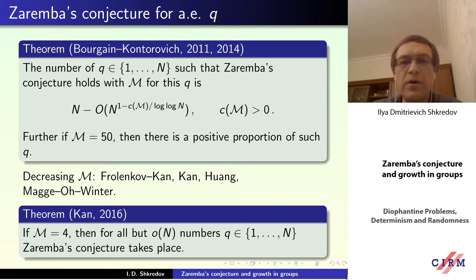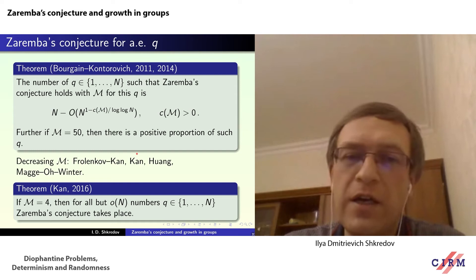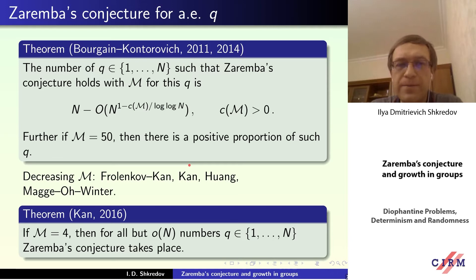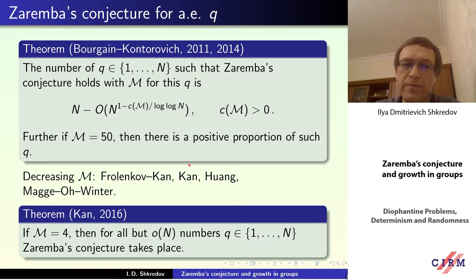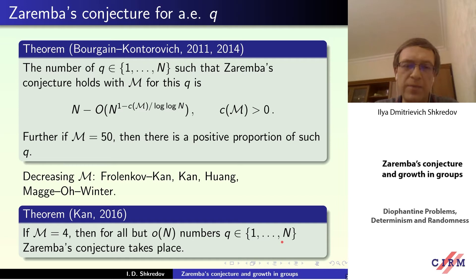For example, if one takes m equal to 50, then they showed there is a positive proportion of such q. After that, the results were improved and generalized by many other authors and simplified by Kahn and Ferlenkov. The best result for concrete m belongs to Igor Kahn, who proved that if m equals 4, then for all but o(n) numbers q in [1,n], Zaremba's conjecture holds.